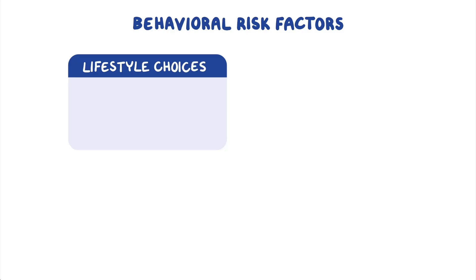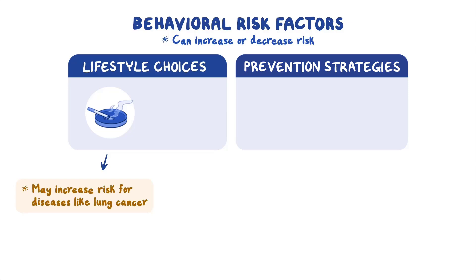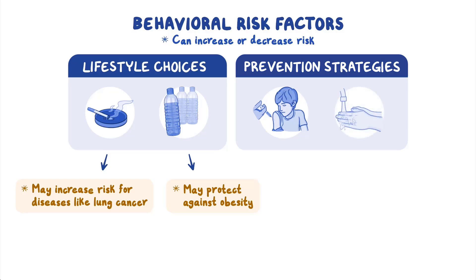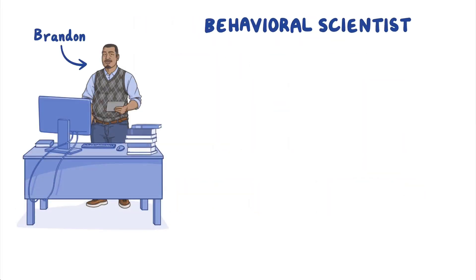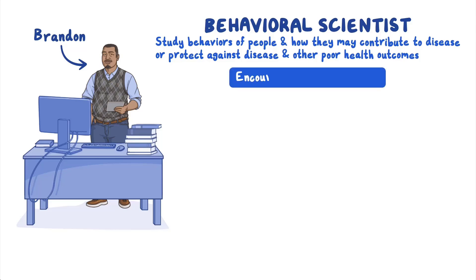Behavioral risk factors such as lifestyle choices and following prevention measures can increase or decrease risk. Because they can be changed or modified, some people may have the ability to change these behaviors and reduce their risk for disease. For example, smoking may increase the risk for diseases like lung cancer, while drinking more water and fewer sugary drinks may help protect against obesity. Prevention strategies like washing your hands regularly can help decrease your risk for disease. Behavioral scientists like Brandon study the behaviors of people and how they may contribute to disease or protect against disease and other poor health outcomes.